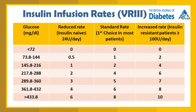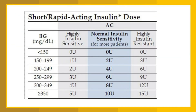Here is another scale for short and rapid-acting insulin. Again, you can see different blood glucose levels with different units for insulin-sensitive patients. There are more than 20 protocols, so you just need to have a general idea — each institution will have their own protocol.